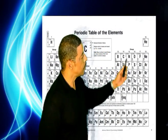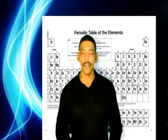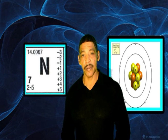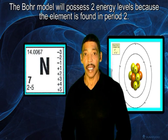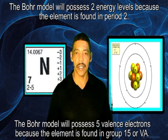Consider the element nitrogen, which is found in group 15 in period two. Based on this information, the Bohr model of a nitrogen atom should possess two electron shells, and five electrons are found on its outermost electron shell.